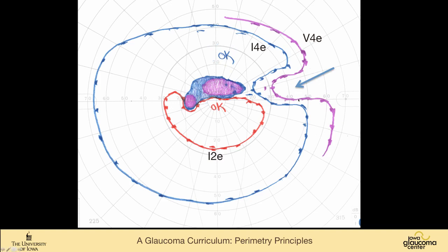This is a nasal step — you can see how it runs along the horizontal meridian for more than 10 degrees, or two isopters more than 5 degrees. This is a very dense scotoma; the purple means that the five-four-E target — the biggest, brightest target — was not seen in this area. The blue means the five-four-E target was seen, but not the one-four-E.